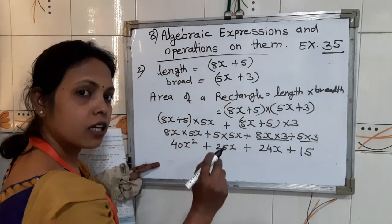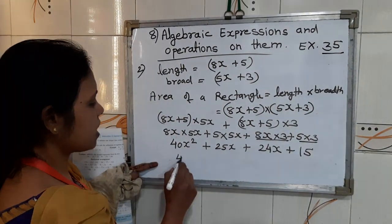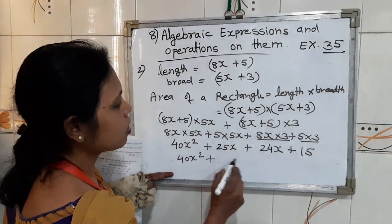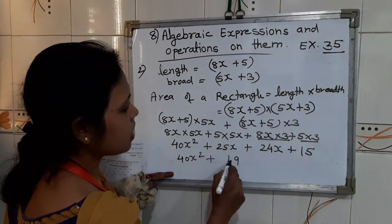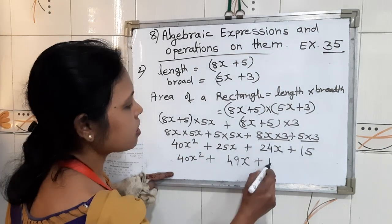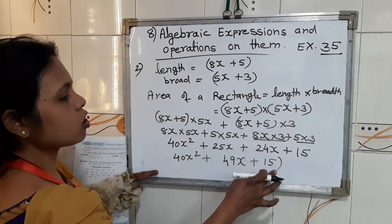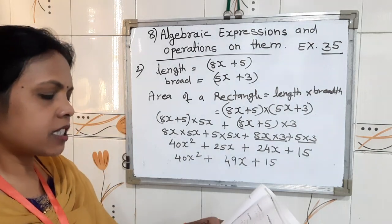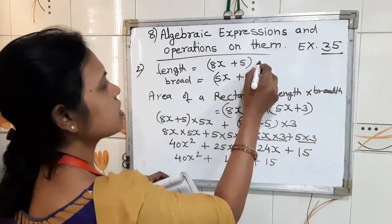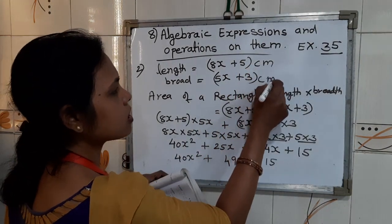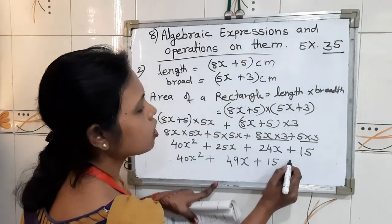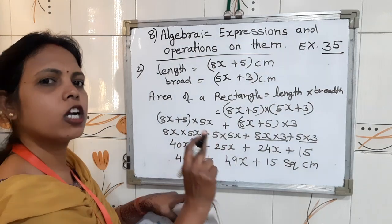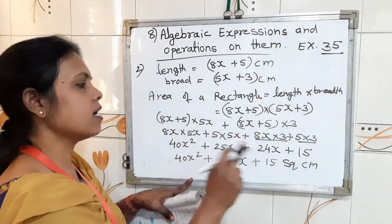So children, since length and breadth are given in centimetres, you will write the area in square centimetres — two times, therefore square centimetres.